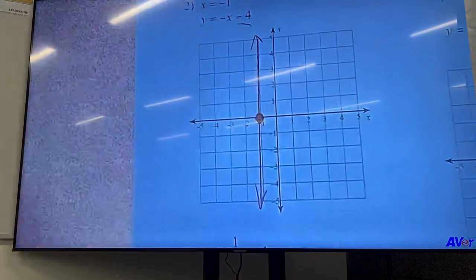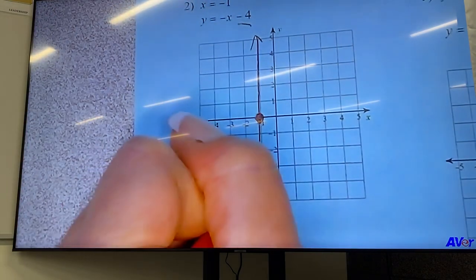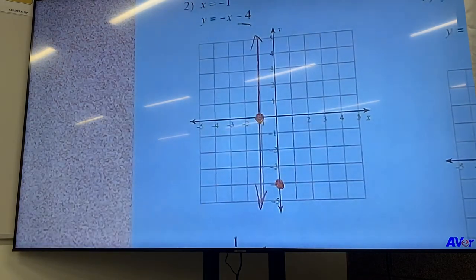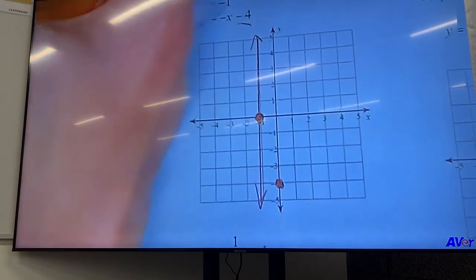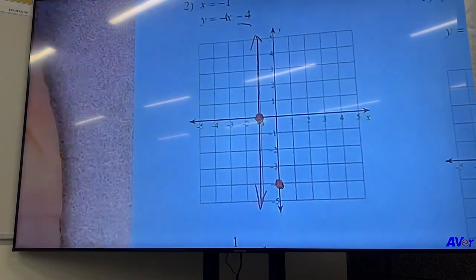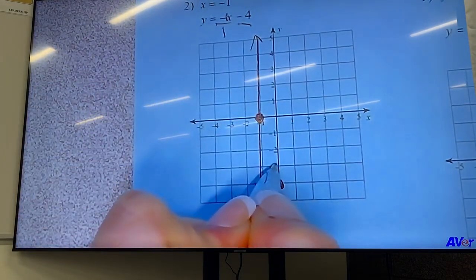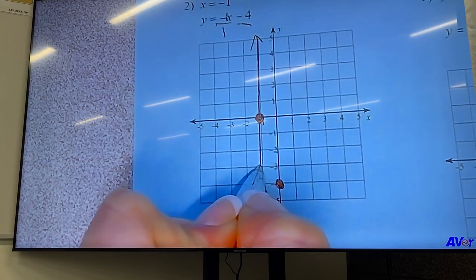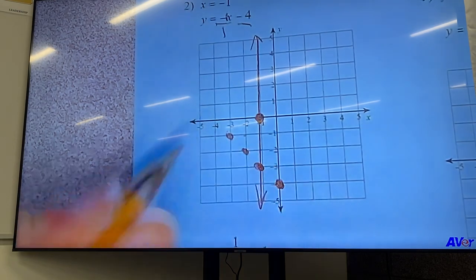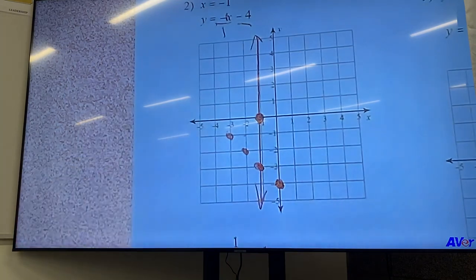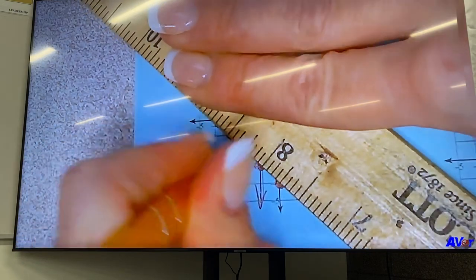The next one, we've got a negative four as the y intercept. And then we've got a slope of negative x. So just like on the first one, there's actually a one in front of it. So it's negative one over one. So we start at negative four. We go up one over one, up one over one, one over one. So see how my line is going down to the right? So that's a negative slope. So here's my line.